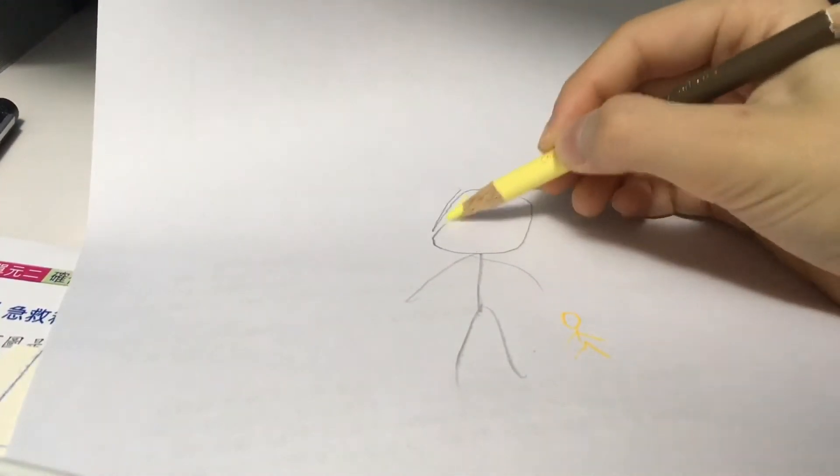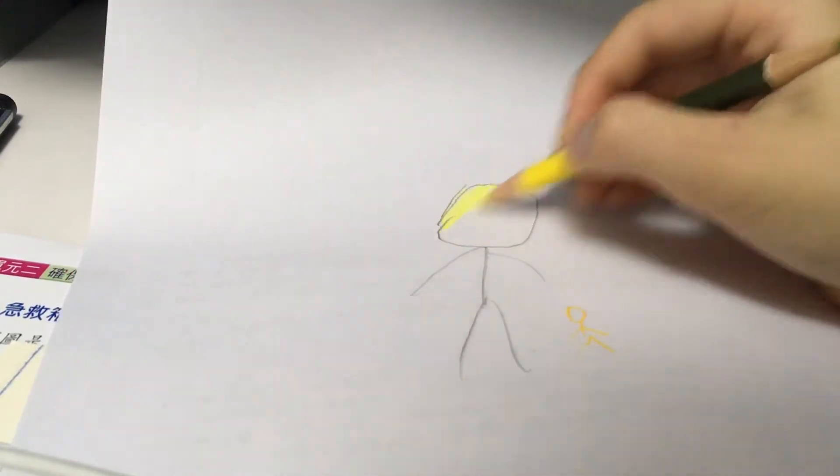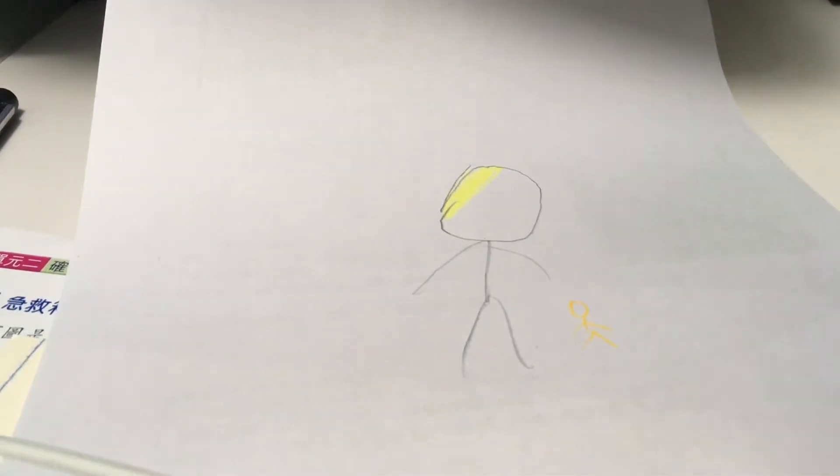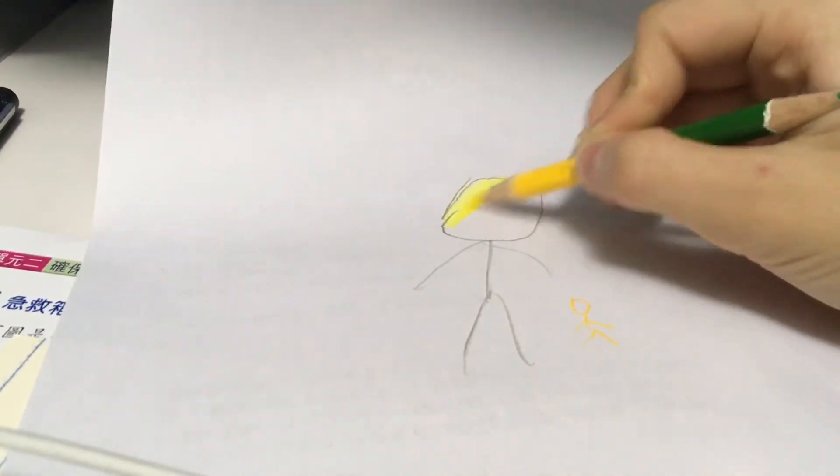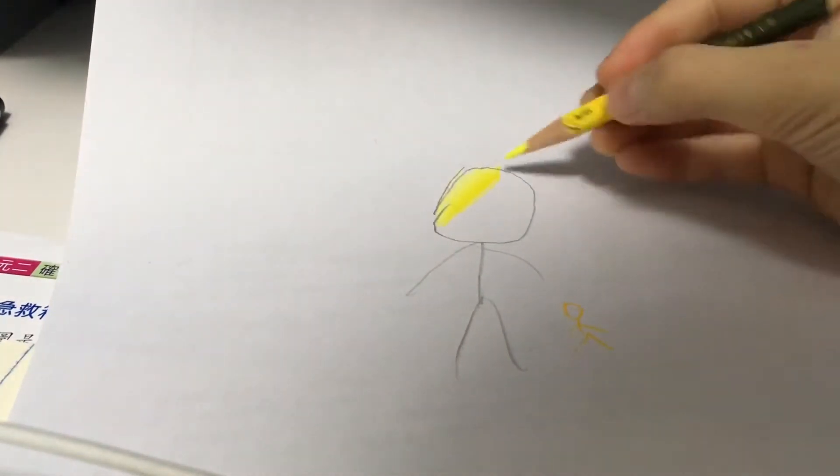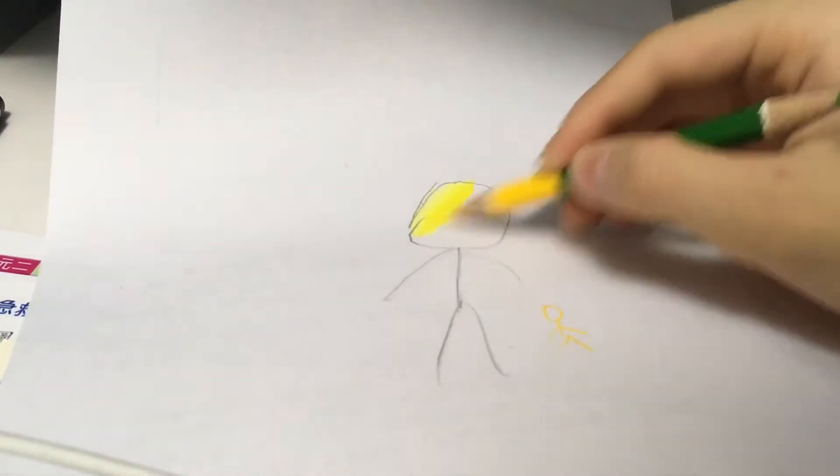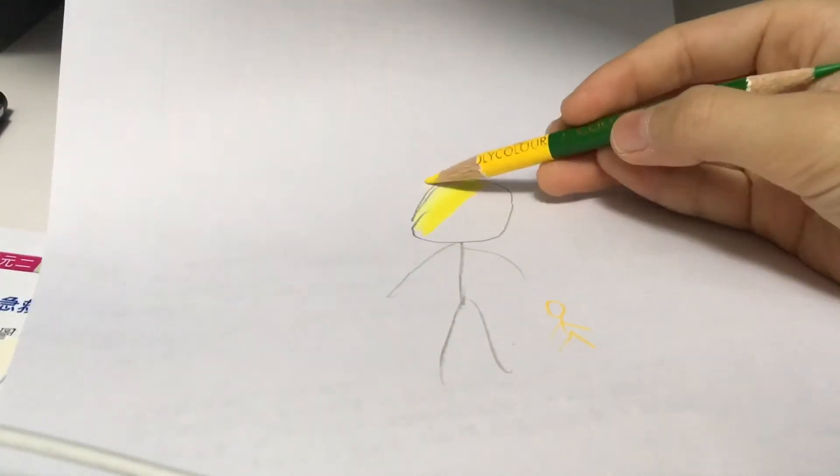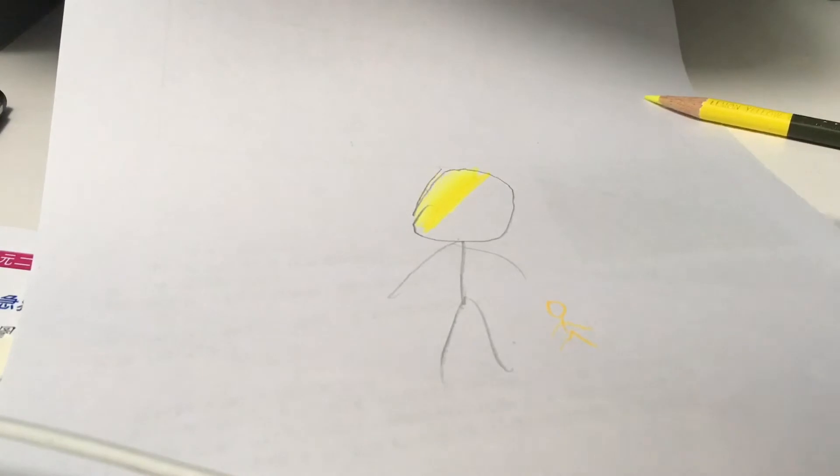You can make it more beautiful just by adding different colors that look the same. Just like this. You can use some yellow, from light yellow to yellow, and then you can use the darker yellow.